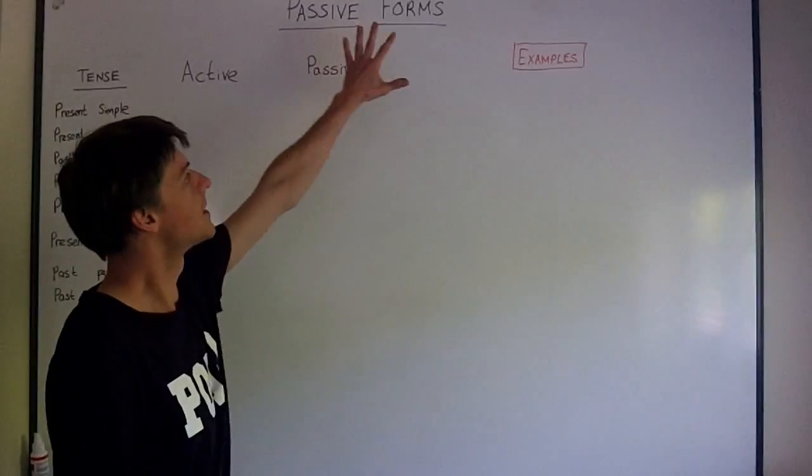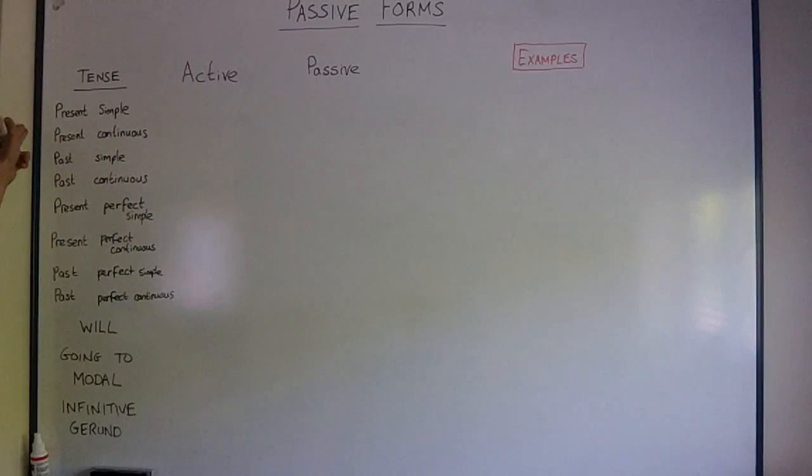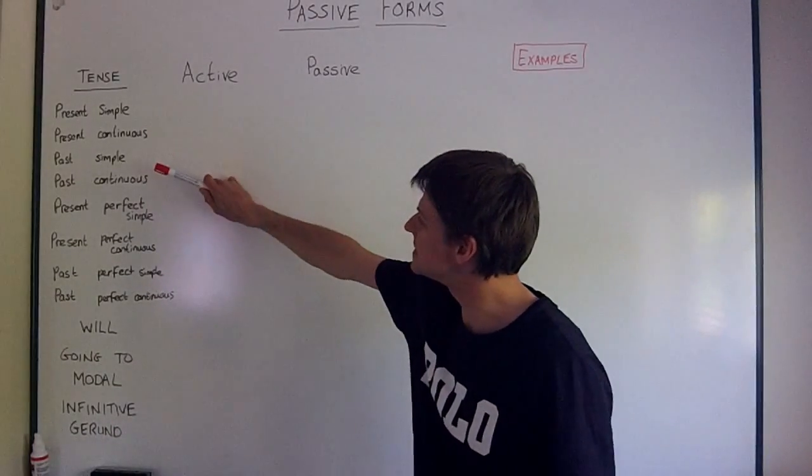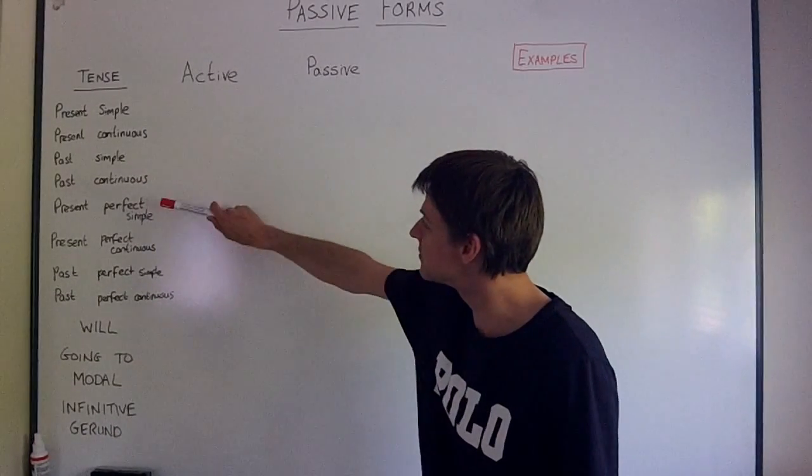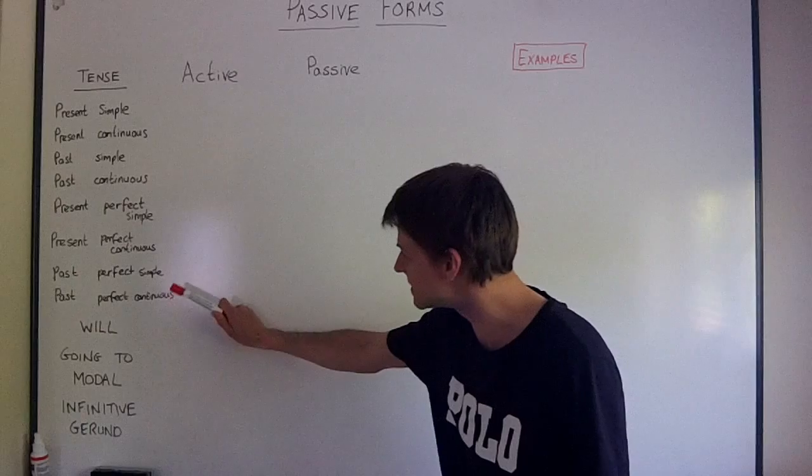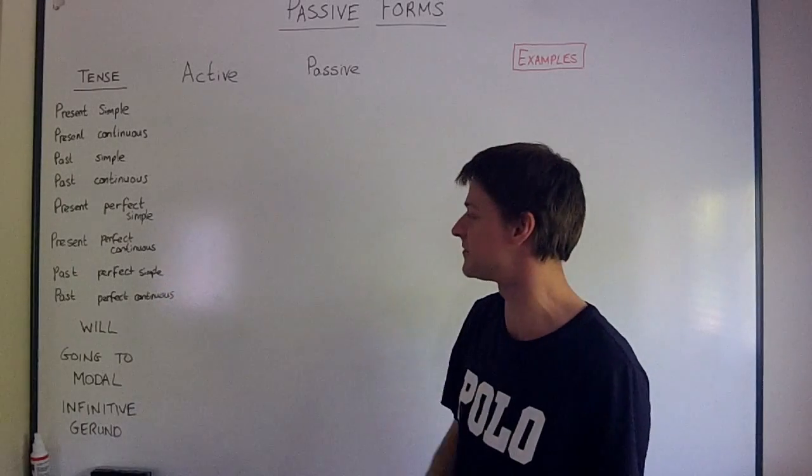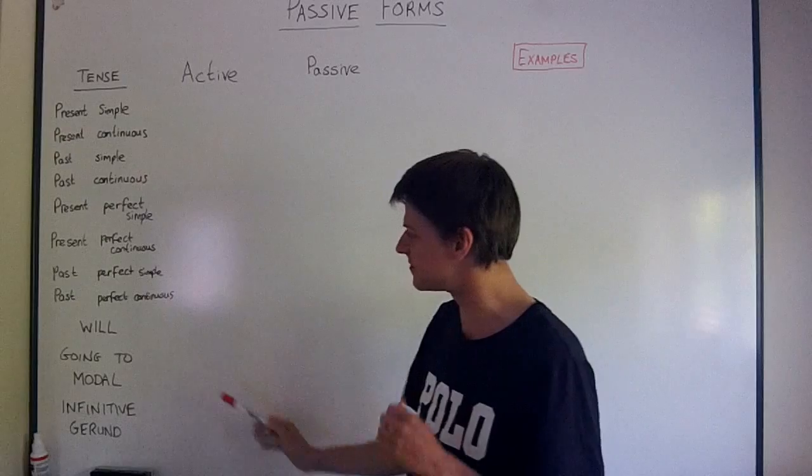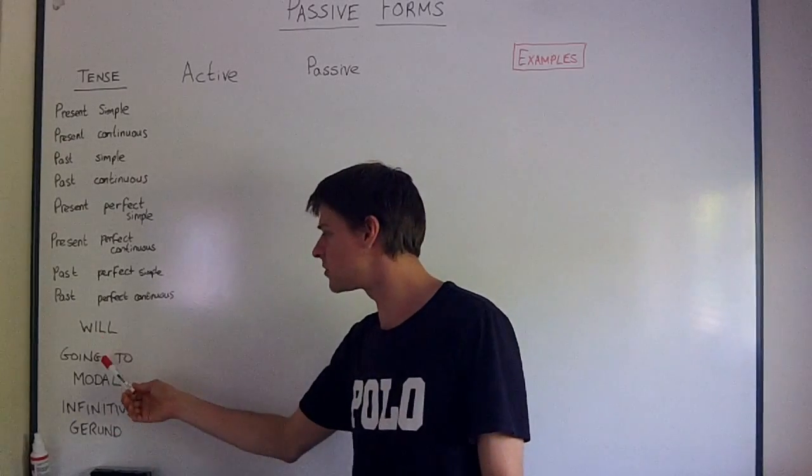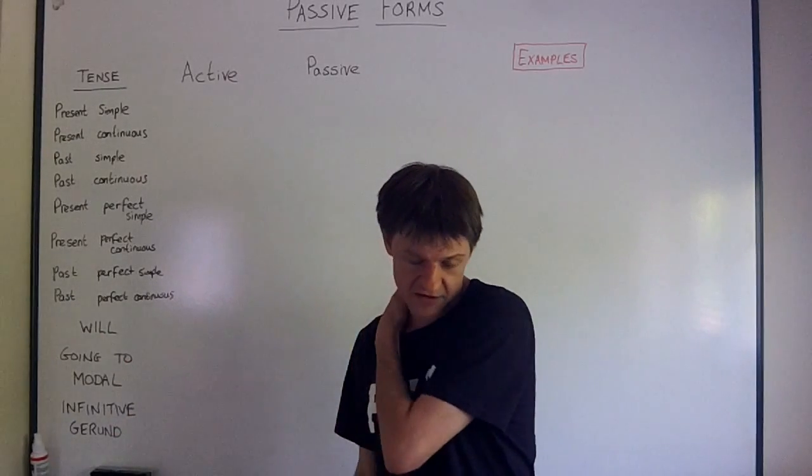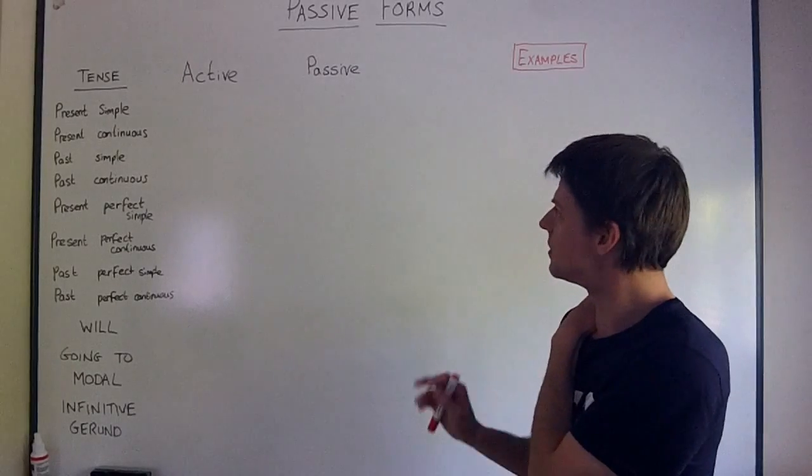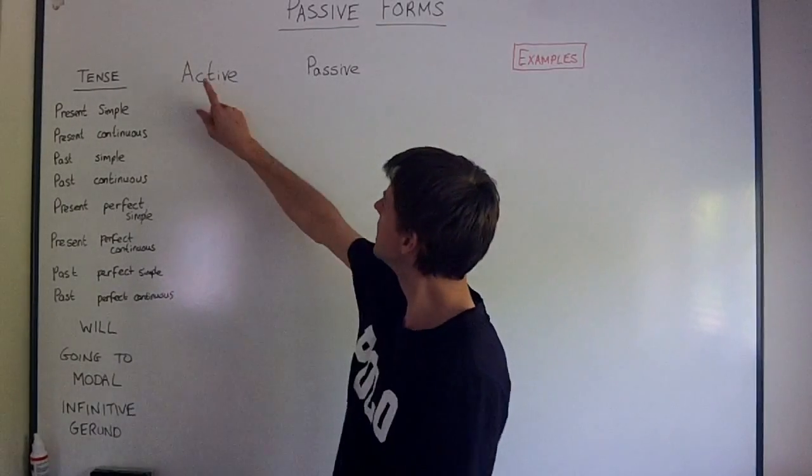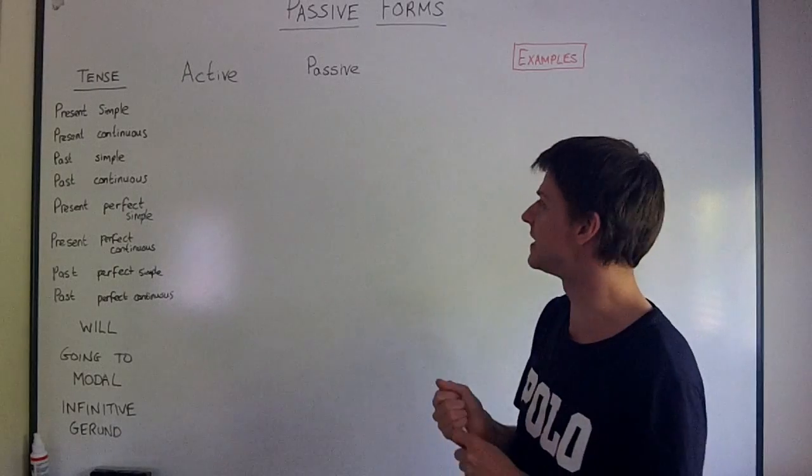Okay, so today it's passive with lots of different tenses. We have present simple, present continuous, past simple, past continuous, present perfect simple, present perfect continuous, past perfect simple, past perfect continuous, which you'll notice are all past and present tenses. Future in English is just will or going to. There are a couple of other tenses, but we're not going to worry about those today. I want to look at active and passive forms for each tense.